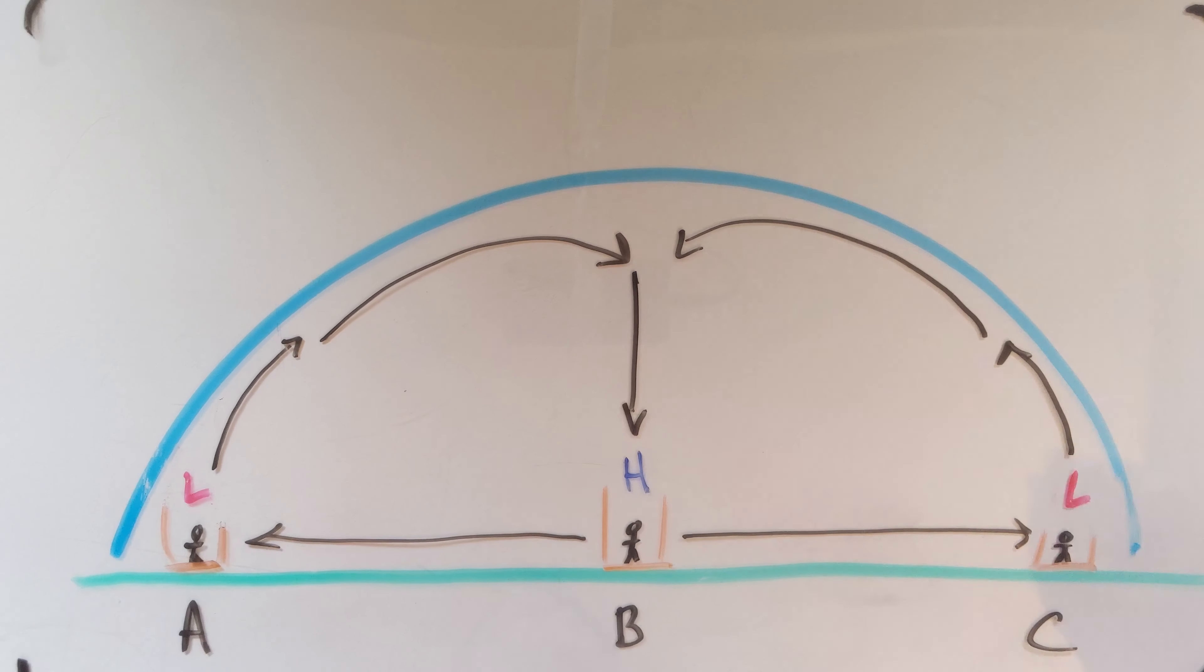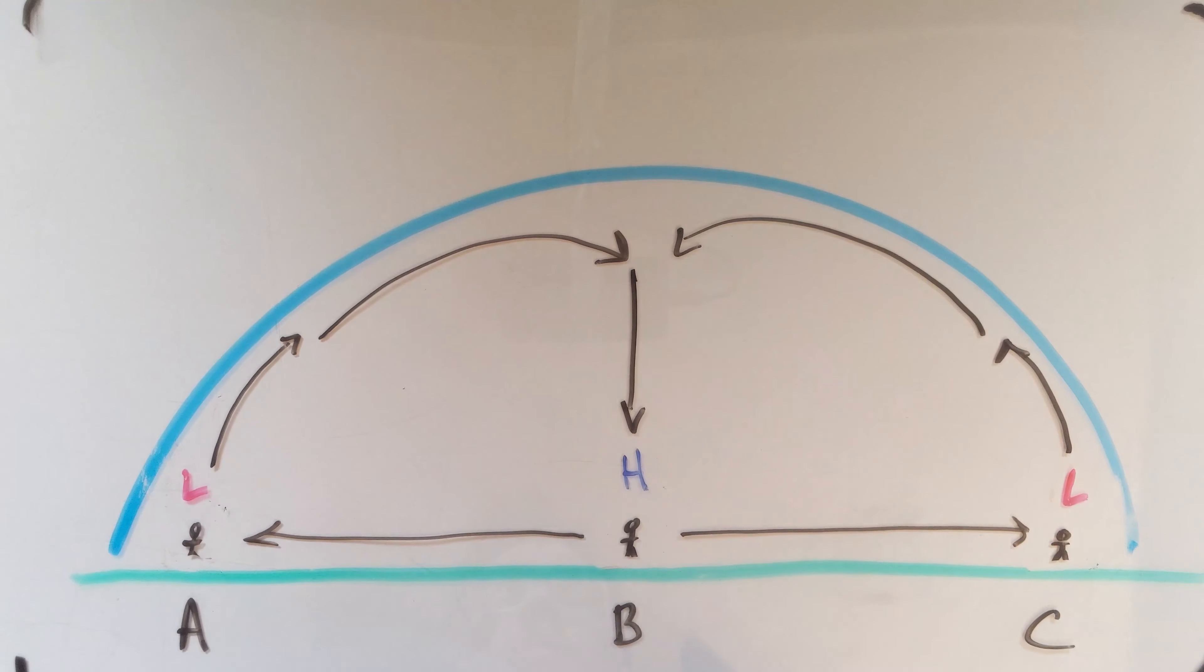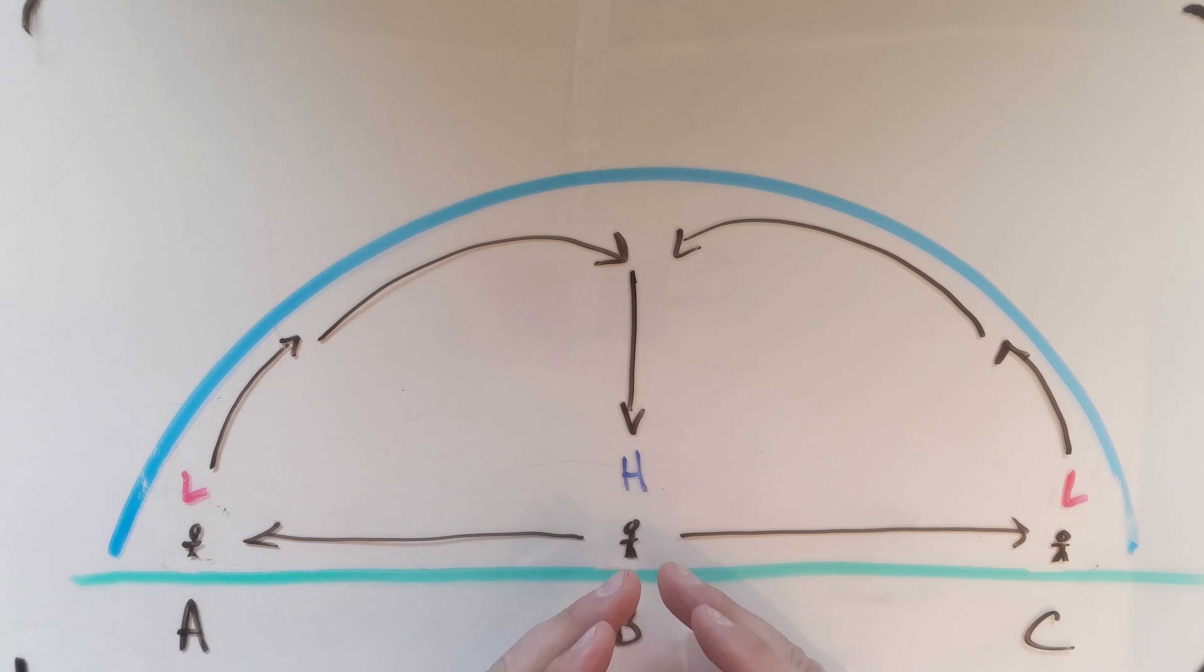Okay, so cold air sinks, warm air rises. So places that we have low pressures, typically we also have warm air. Places where we have high pressures, we have colder air. So if you think about things a little bit, we're going to connect that to our experience in the future.